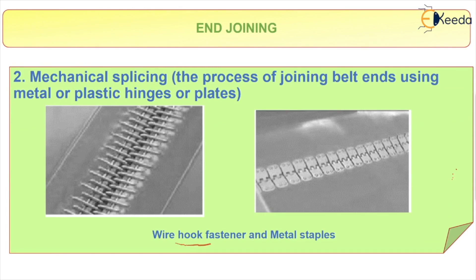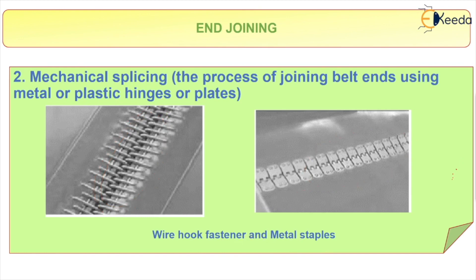In mechanical splicing, we have a wire hook fastener and metal staples. The wire hook fastener has a chain-type structure, as you can see, and with this we can join the ends of the belt. Similarly, with the help of metal staples, we can also join the ends of the belt.